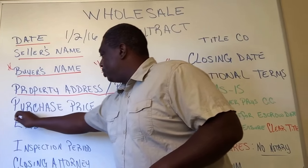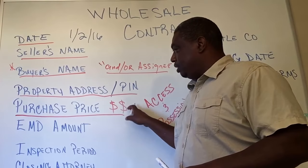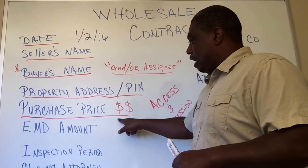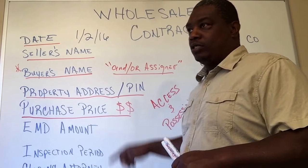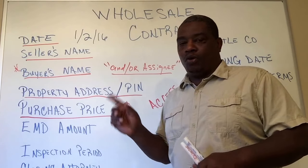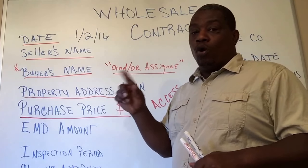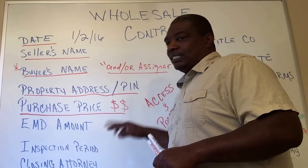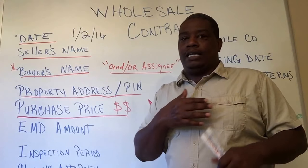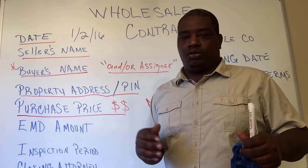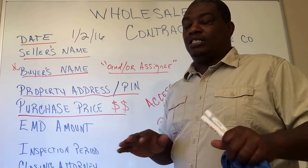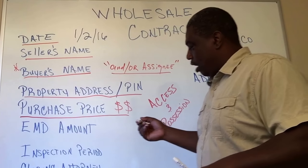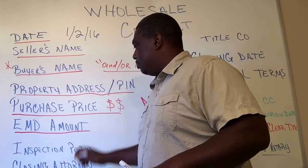Also, the purchase price needs to be on the contract. It's important that the seller knows how much they're selling for and the title company knows the sale price. If it's $100,000, I write out '100,000 dollars and zero cents' — I spell it out to make sure there's no question about any amounts on the contract.